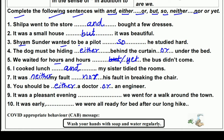'It was a pleasant evening __ we went for a walk around the town.' One sentence is the result of the other, so we use 'so' — 'it was a pleasant evening, so we went for a walk around the town.' It was a beautiful evening, so because of that we went for a walk around the town.